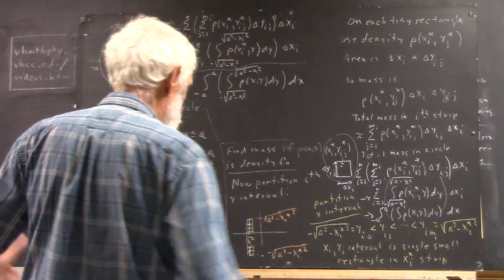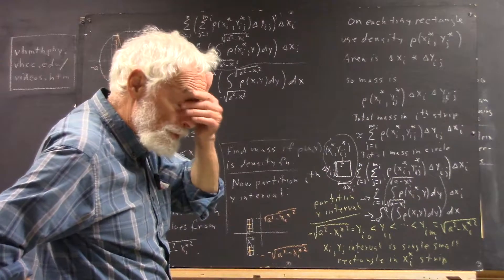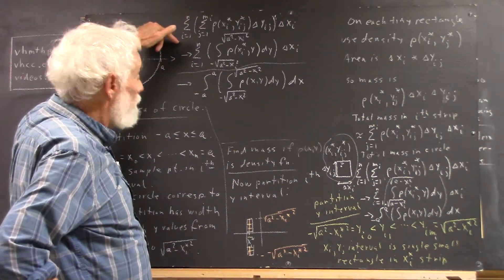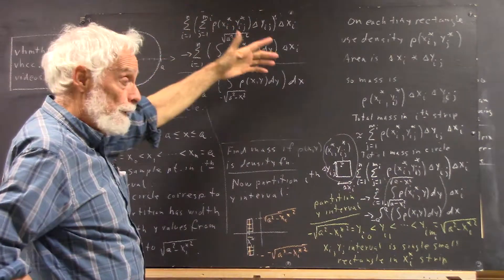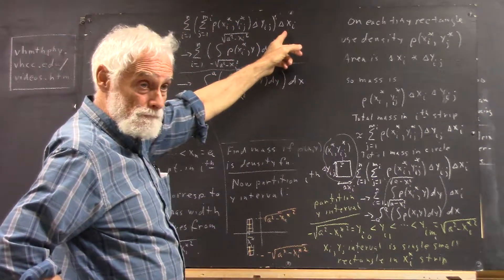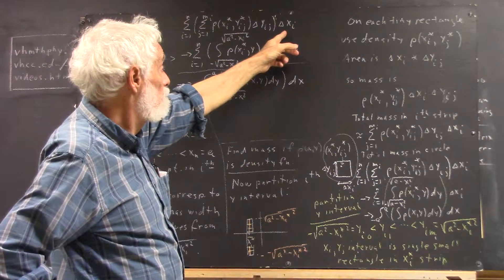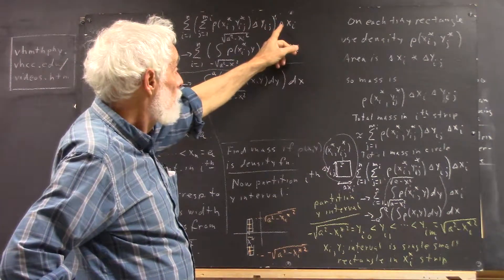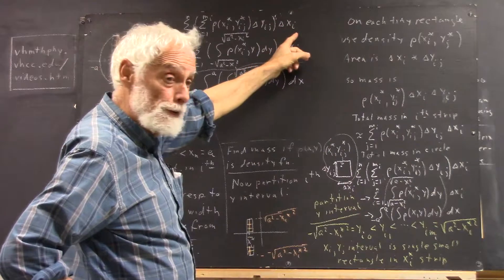Okay, so again, our discrete expression is for every interval of our x-partition, the width of the partition is going to be expressed by delta x sub i.